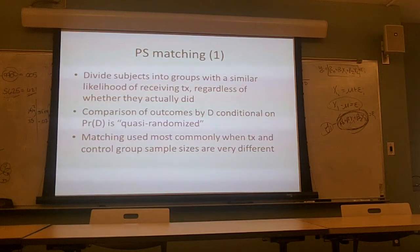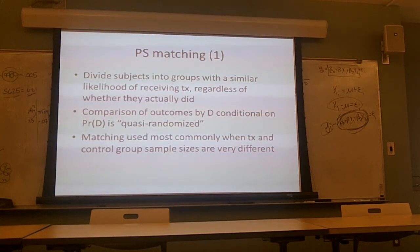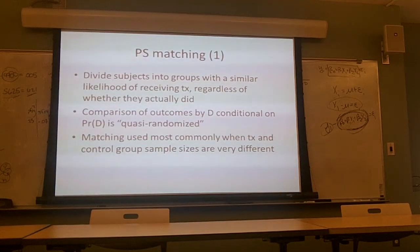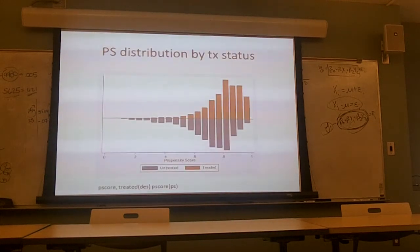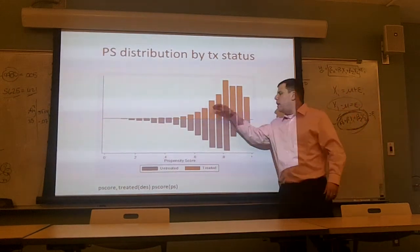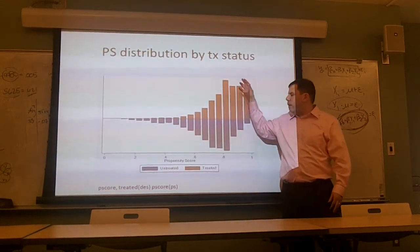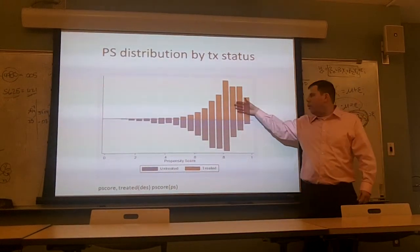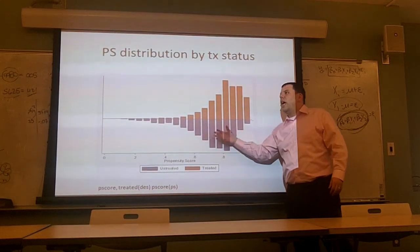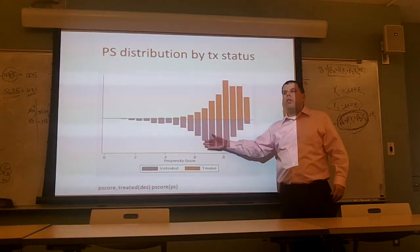The first approach is matching. The algorithm is straightforward: divide subjects into groups with a similar likelihood of receiving treatment, then compare their outcomes by whether or not they got the treatment, conditional on their probability of getting it. Matching is most commonly used when we have a relatively small treatment group and a much larger set of individuals who potentially could be in the control — you want to find the controls who best match your treatment subjects.